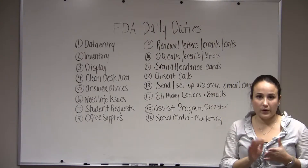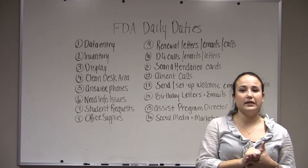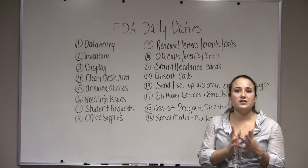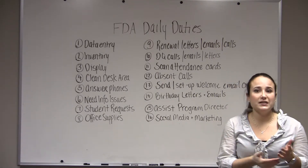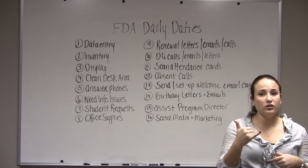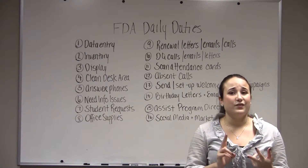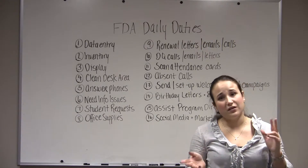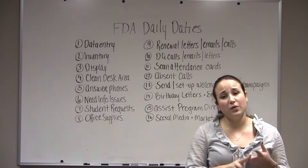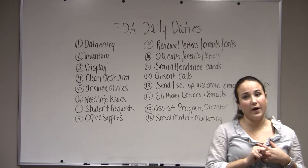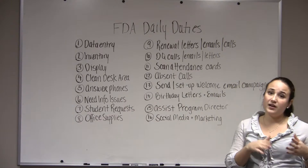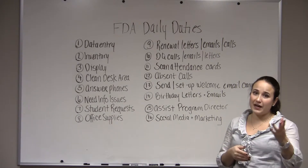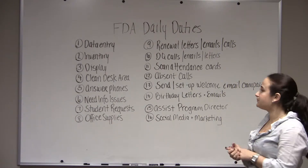Delinquent calls and emails — and even letters. When someone ends up on your delinquent list, they need to be called and emailed. If enough time passes, about a month to two months, you probably want to send a letter directly to their house as well. If you decide to go the collections route, that's also up to your front desk administrator.